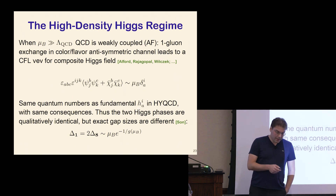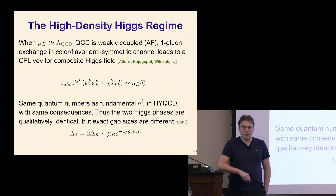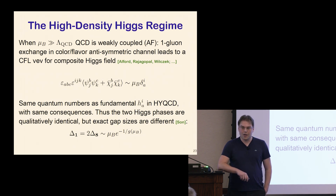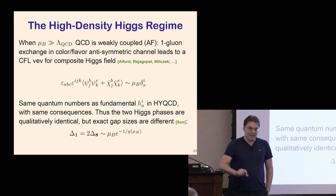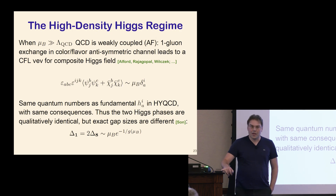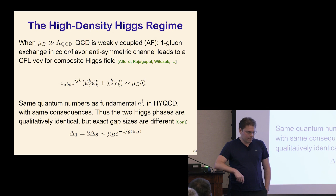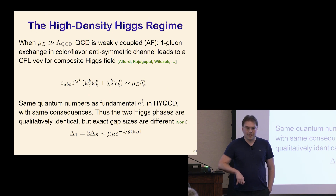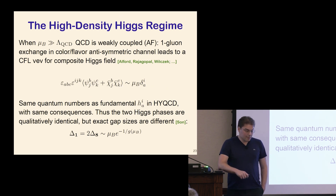The ultra-high-density Higgs regime looks basically the same as the Higgs phase of our Higgs-Yukawa model. Because of asymptotic freedom, single-gluon exchange in the color-flavor antisymmetric channel leads to diquark pairing. The diquark operator that condenses has exactly the same quantum numbers as the fundamental Higgs field in the other model; it gets a color-flavor-locking VEV. Because the symmetry-breaking pattern is the same, many consequences are also exactly the same: the SU(3) gauge group is completely Higgsed, SU(3) flavor symmetry is unbroken, U(1) baryon is spontaneously broken.